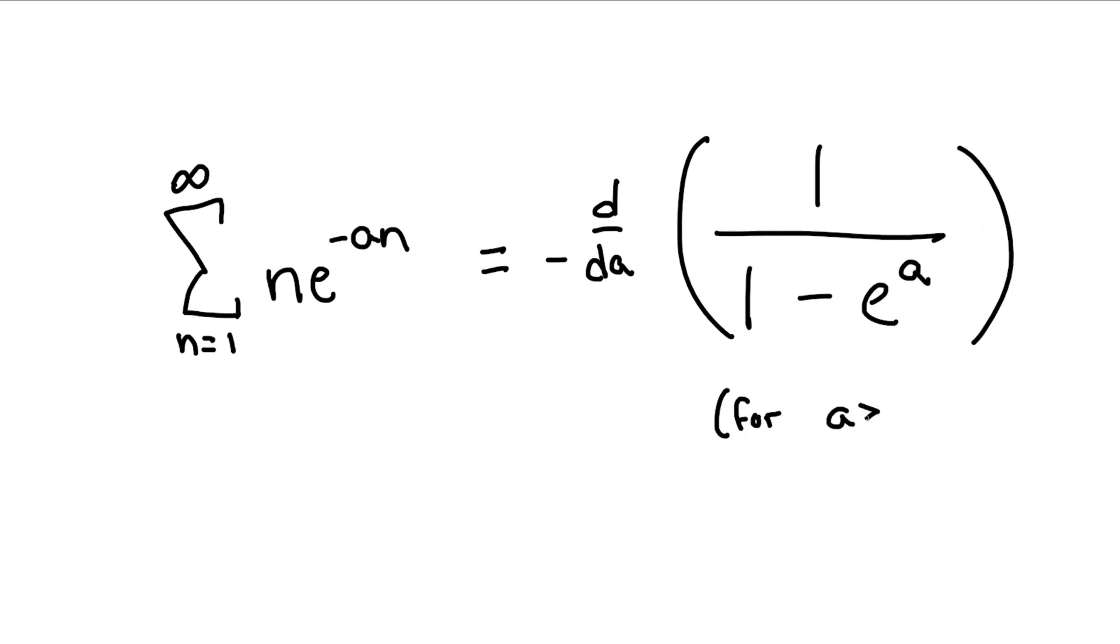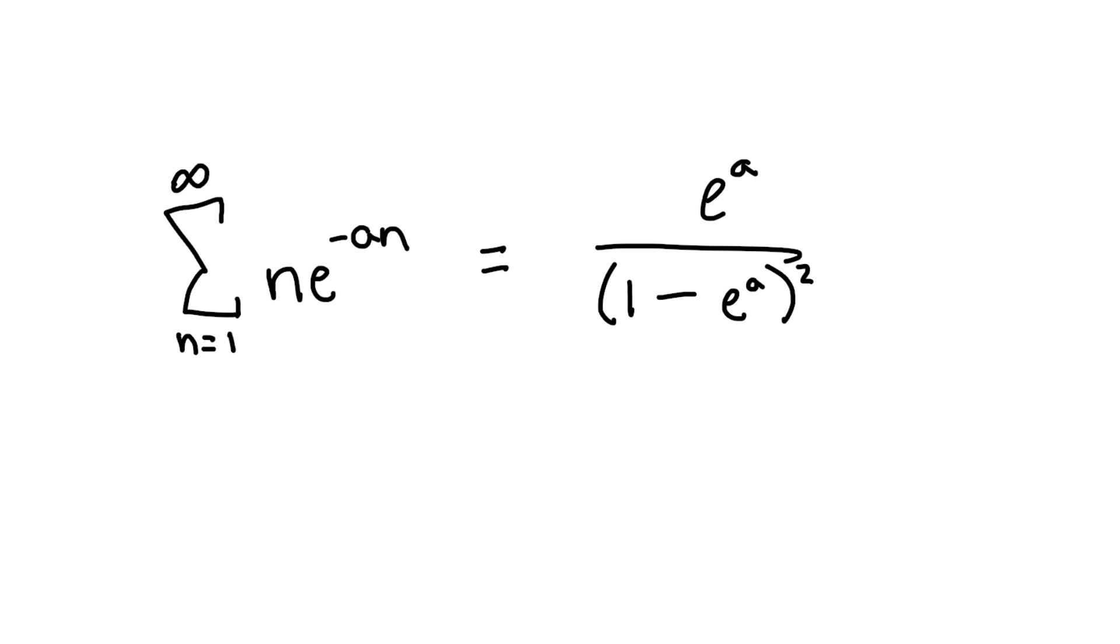Now, we can take the derivative, and we find that our sum is indeed convergent and gives e to the a divided by 1 minus e to the a squared. But, unfortunately, this still isn't very helpful. When we take a to zero here, the denominator just vanishes, and the sum blows up, as we should expect.